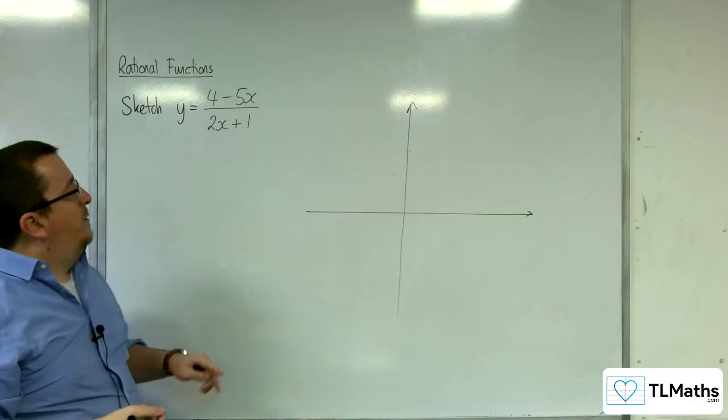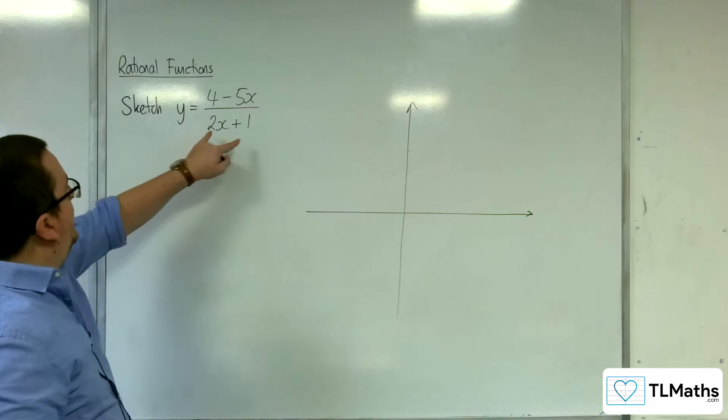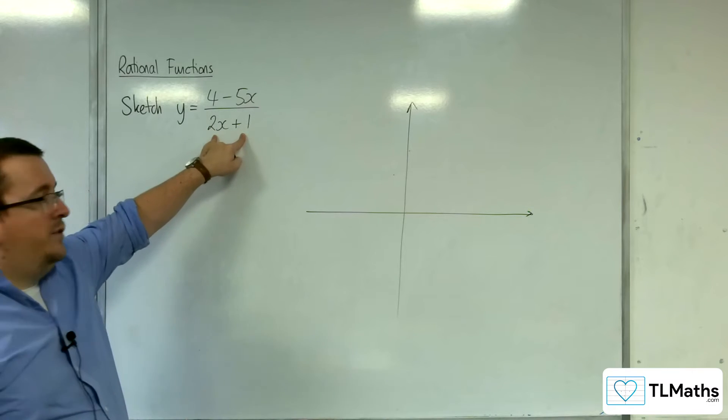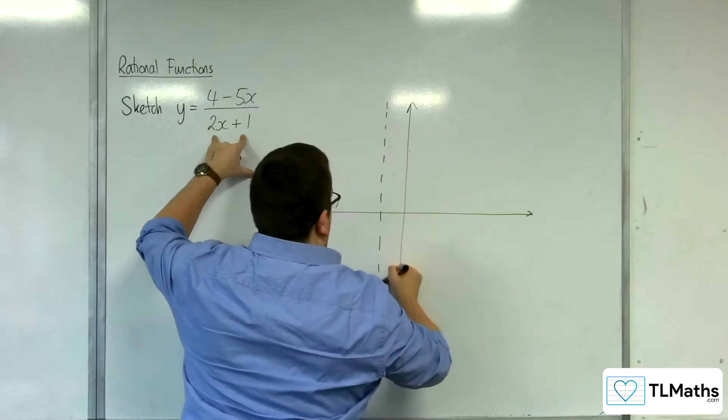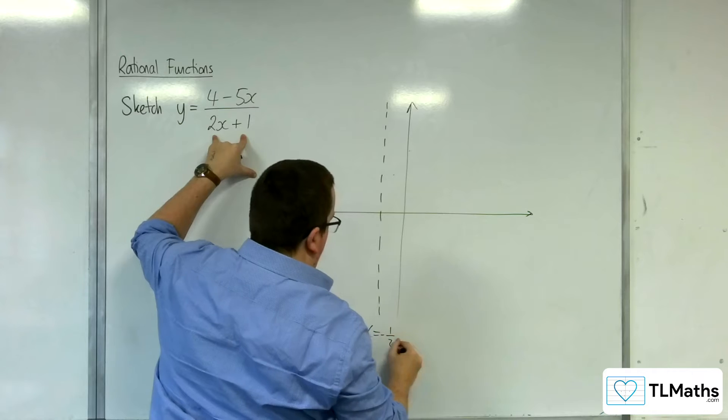So where's the denominator 0? That's where our vertical asymptotes are going to be. That will be when x is equal to minus 1 over 2, minus 1 half. So we have one vertical asymptote at x equals minus 1 half.